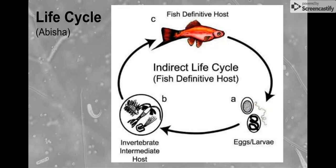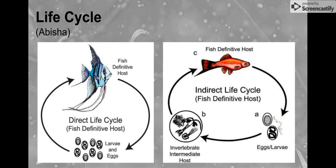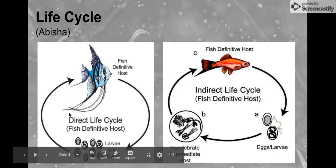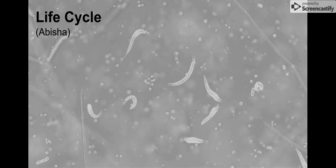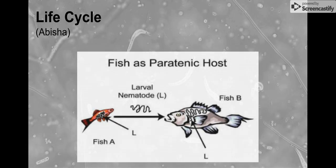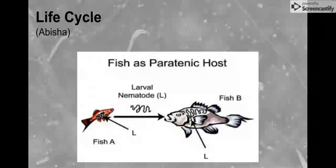There are only two life cycles nematodes have. If it is an indirect life cycle, it will have an intermediate host — this is probably a parasite because it has a host. No intermediate host means it is a direct life cycle.